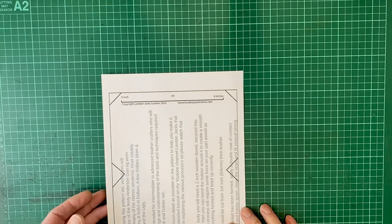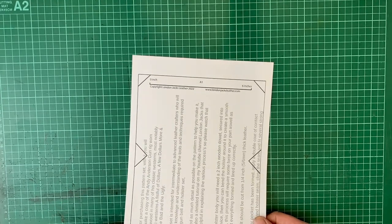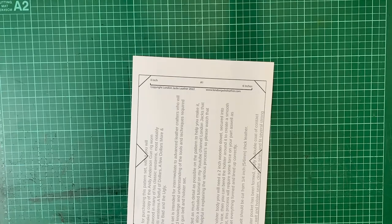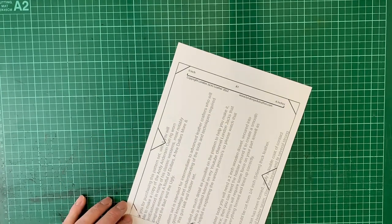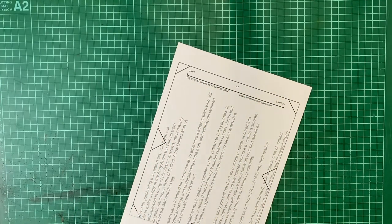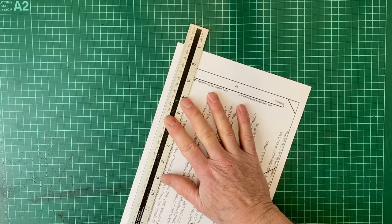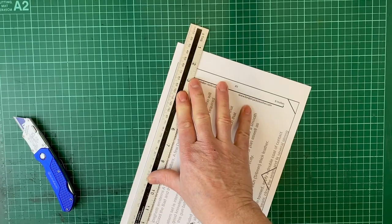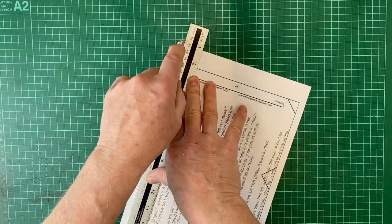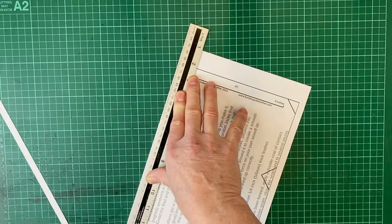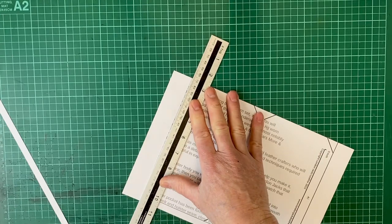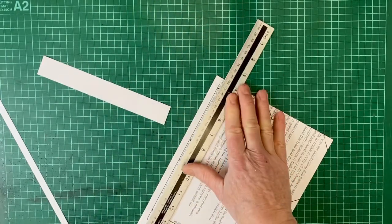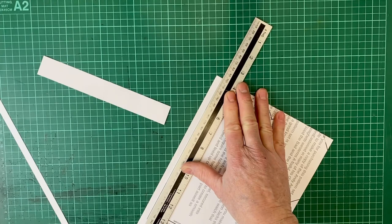Once you've got all the pages printed off, you'll notice there's a black or gray line all around the edge and these registration marks. You're going to need to trim off the excess, so just get a nice straight edge and a nice sharp blade and trim all these edges just like this.